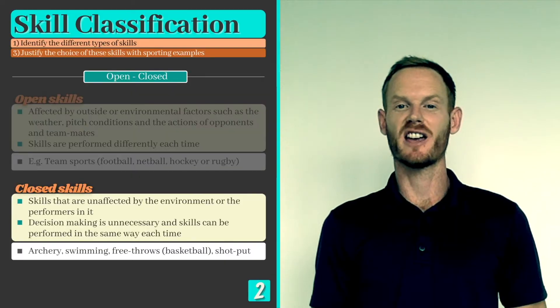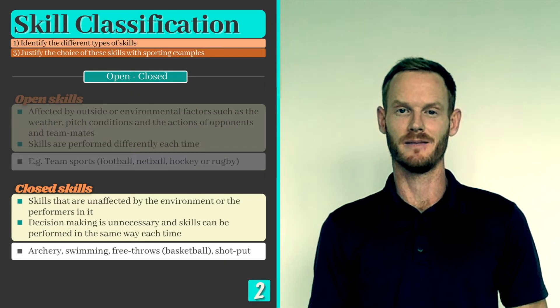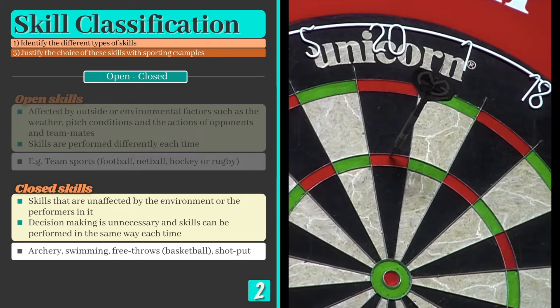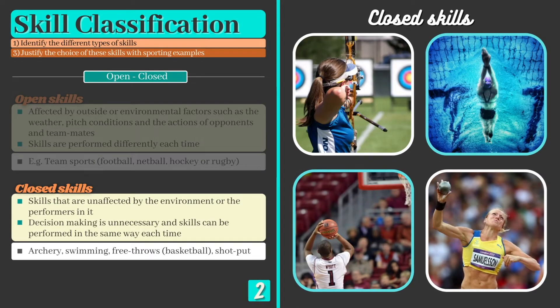Closed skills on the other hand are unaffected by the environment or the performers in it. Decision making is often unnecessary and skills can be performed in the same way each time. Examples of closed skills include archery, swimming and shooting free throws in basketball.